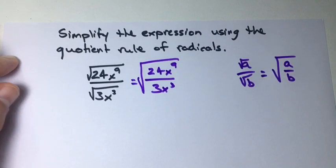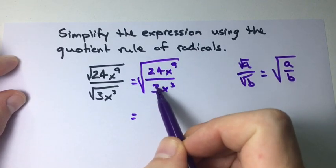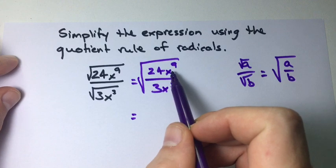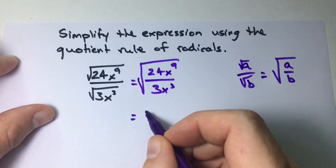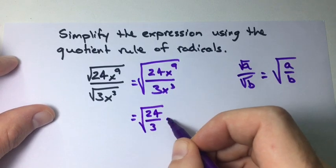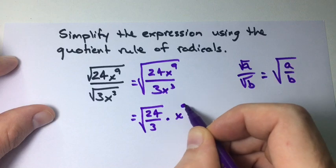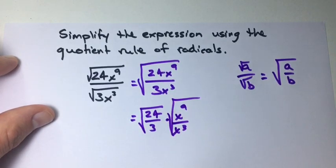Now what I like to do is split these up. What I mean by that is put the numbers under one radical and then put my x's in another radical. So we have 24 over 3 square root times x to the power of 9 over x to the power of 3 and that's the square root as well.